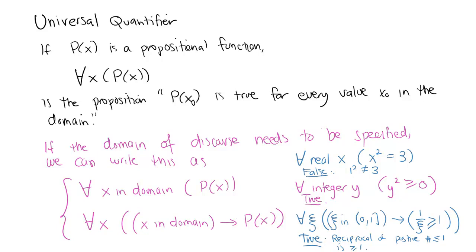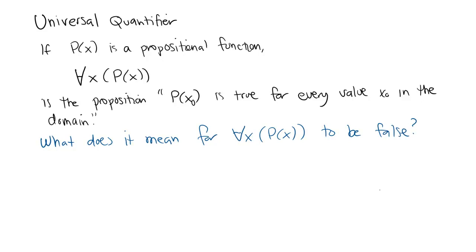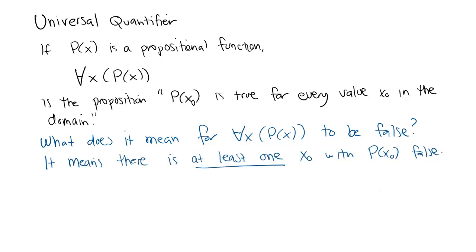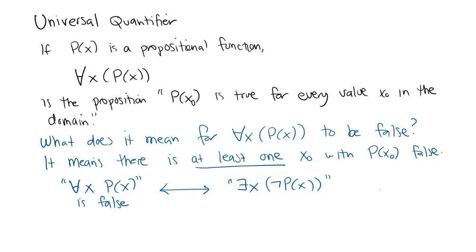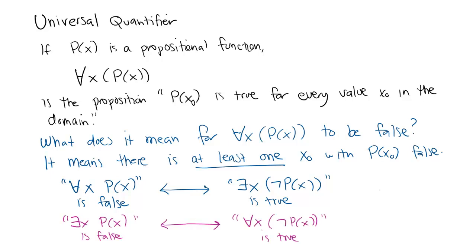What does it mean for '∀x P(x)' to be false? It means P(x) is false for at least one particular value — there exists at least one x in the domain for which P(x) is not true. That's an existential statement. So '¬(∀x P(x))' is logically equivalent to '∃x ¬P(x).' Conversely, '¬(∃x P(x))' means for every x, P(x) is false — that is, '∀x ¬P(x)' must be true.